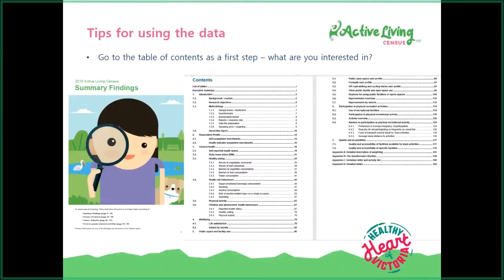Because there's so much information — over 160 pages of data in the detailed report — I'd recommend starting at the table of contents and identifying the parts you can flick straight to for the information you need. Similarly in the Selected Findings Report, there's a summary page that tells you on each of the sections where you can find that information. A really good first step.